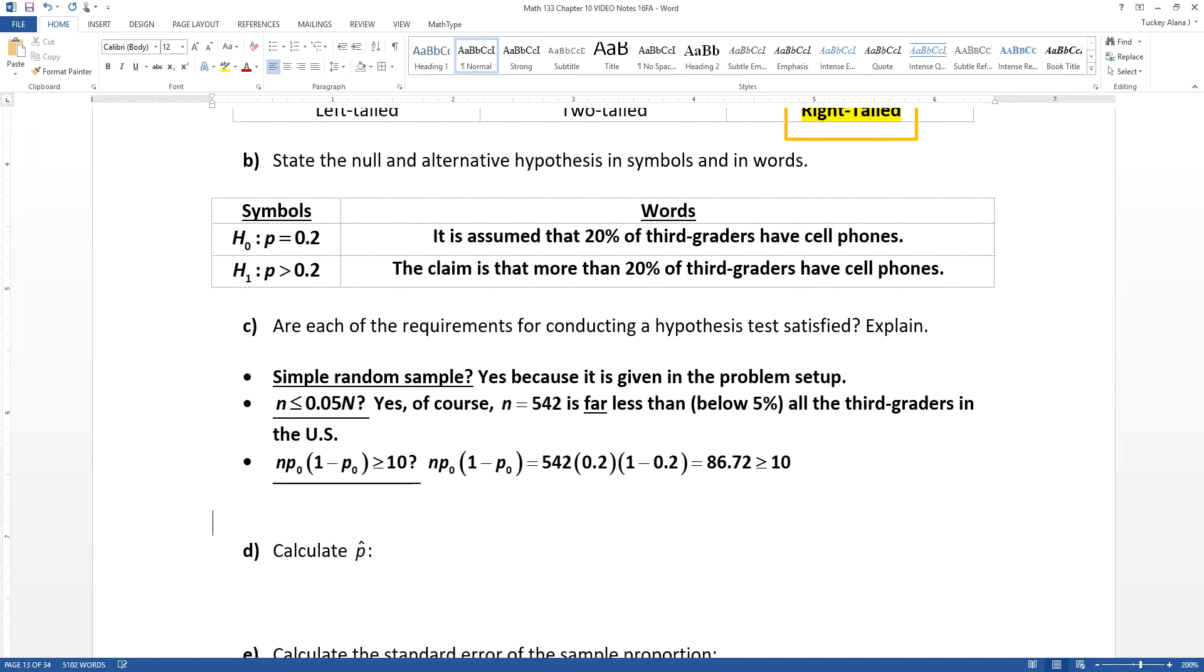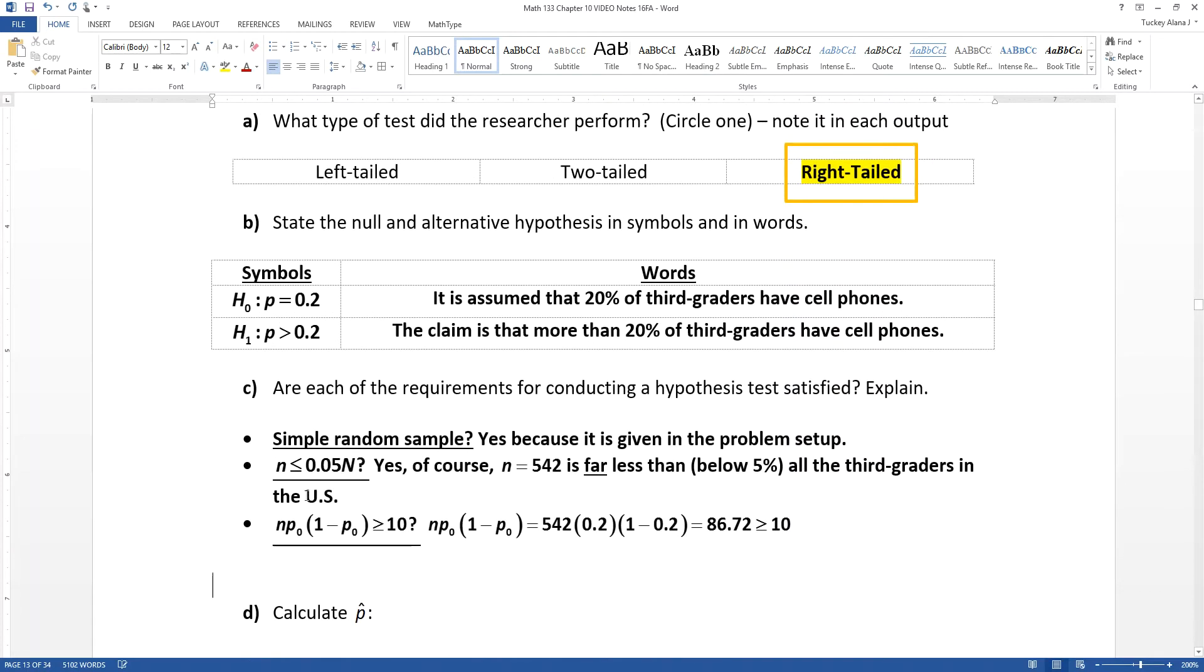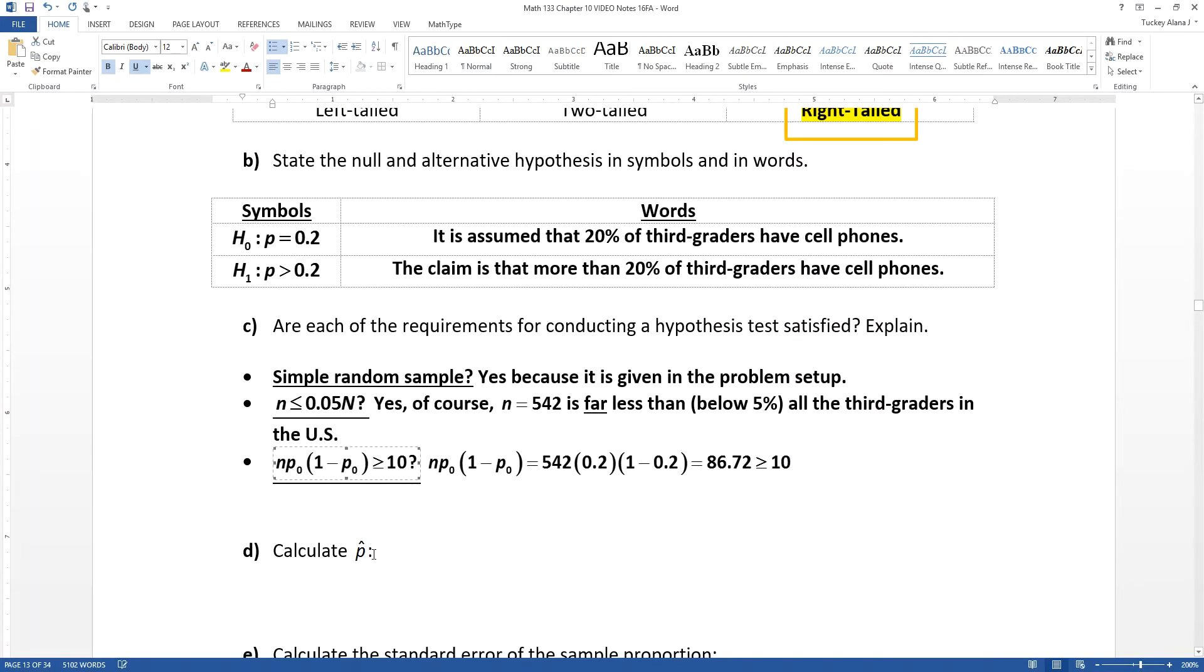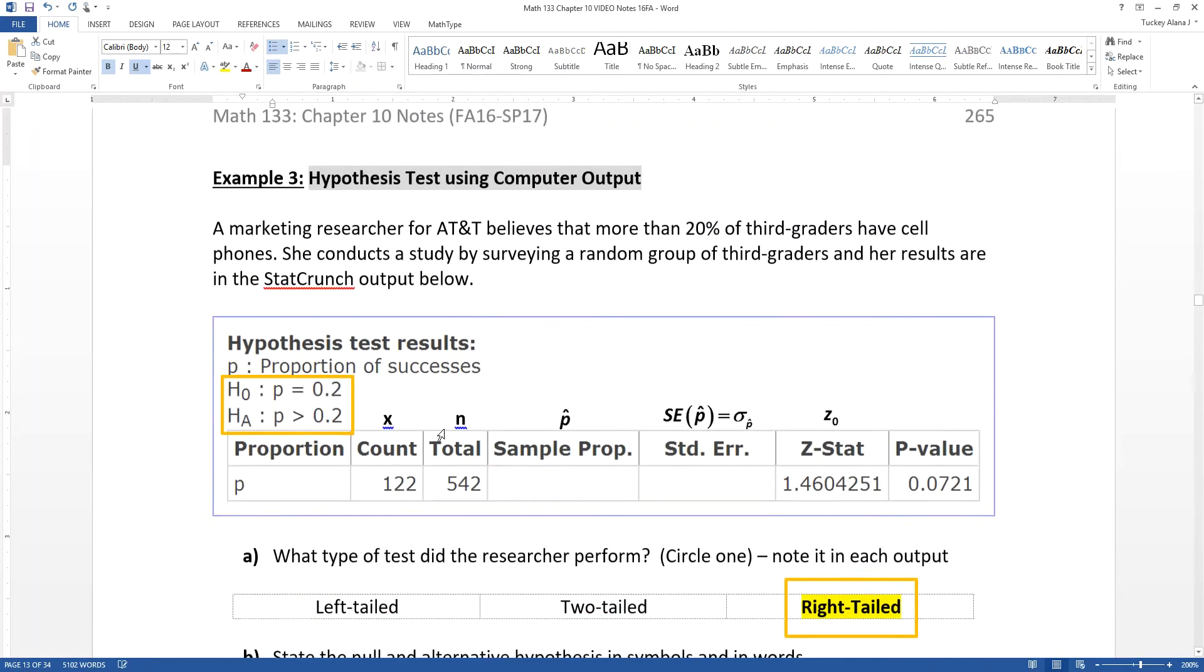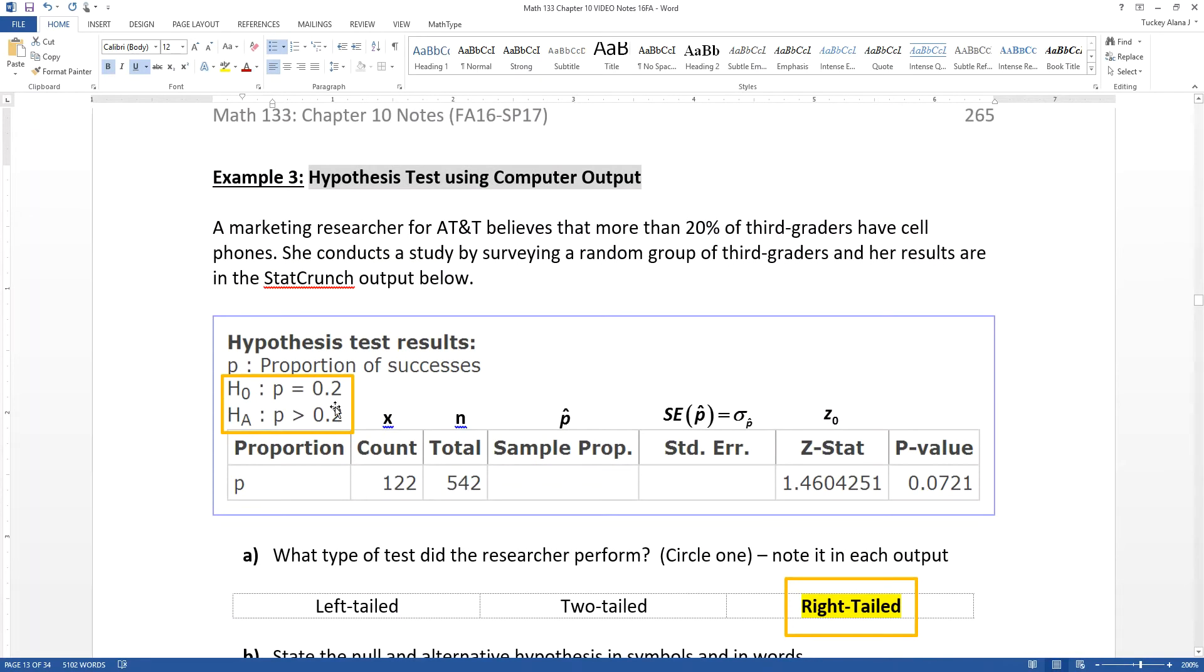Now with the third one, in order to prove normality, we have to check. We need N times P₀ times (1 - P₀) to be greater than 10. Well, N, if you recall up at the top, was 542. P₀ is your null hypothesis value of 0.2.